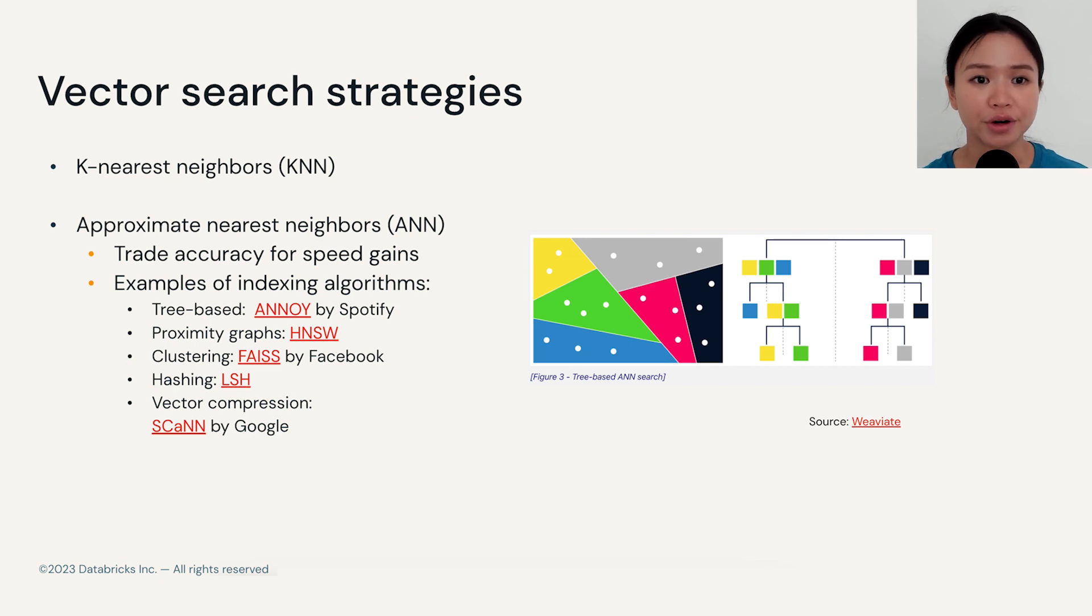Among all of these algorithms, we see that they can span from using tree-based methods, clustering to hashing. We'll cover two of them, FAISS and HNSW, which are two of the most popular algorithms implemented by vector stores.